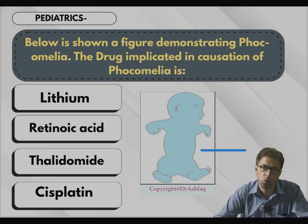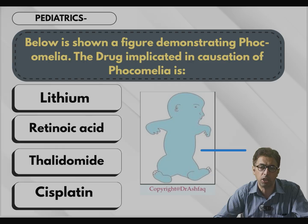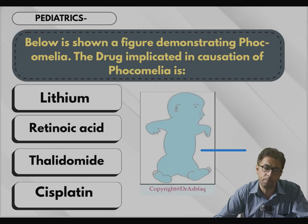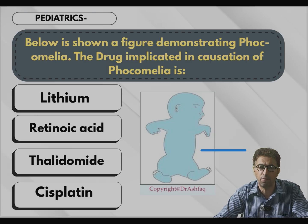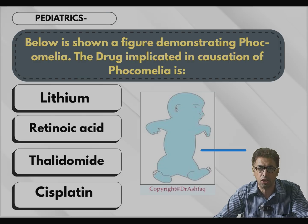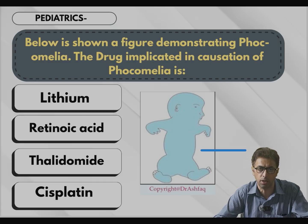This is basically a combination question from embryology and pediatrics. In embryology we read teratogenesis, and in pediatrics also we read teratogens. Teratogens are drugs which have implications on the development of the embryo, and the embryo will be born with certain defects as a result of intake of these drugs. Teratogens can be physical, chemical, and various other varieties, but here it is mostly drug-induced teratogenesis. This should be a very easy question for a standard student. Lithium leads to development of Ebstein's anomaly of the heart.